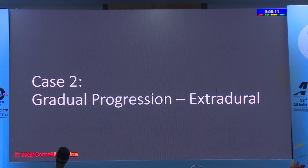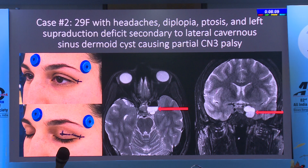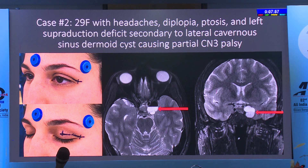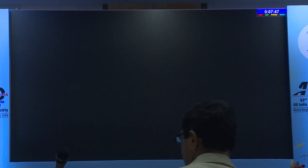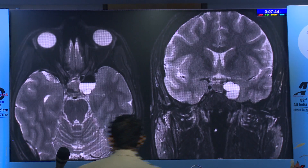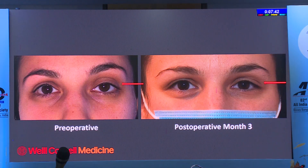Beyond these easier first cases, we started moving into extradural cases. This was a challenging dermoid cyst causing compressive optic neuropathy of cranial nerve 3, presenting with ptosis and headache. At the skull base this would be difficult to access, with significant brain retraction required, whereas the orbit provides a relatively direct pathway. We've now moved past that and are dividing the meningoorbital band and reflecting the temporal lobe.